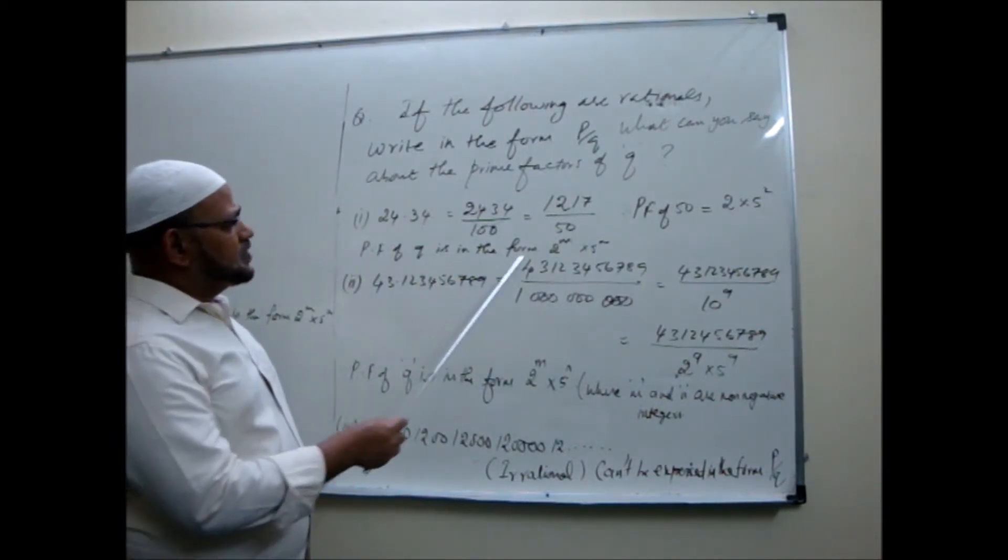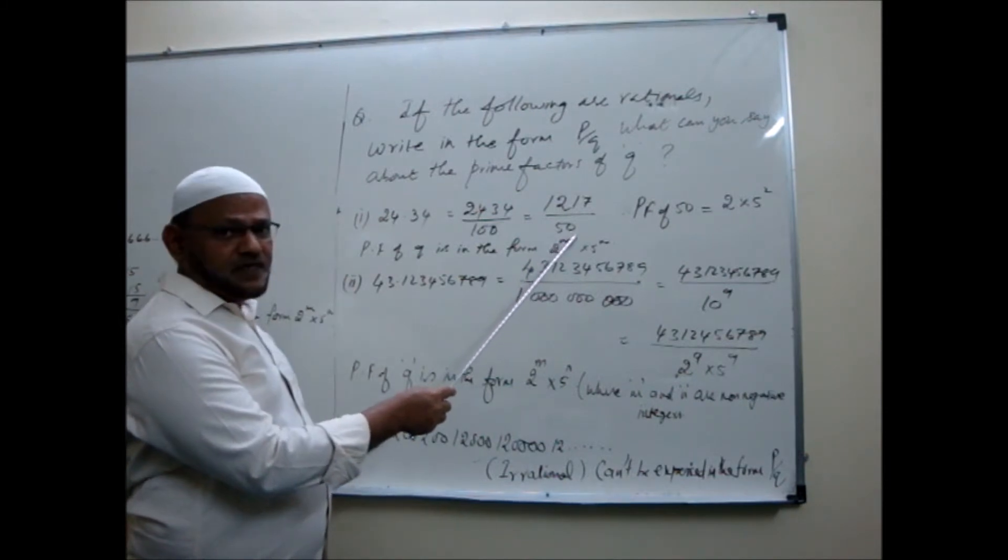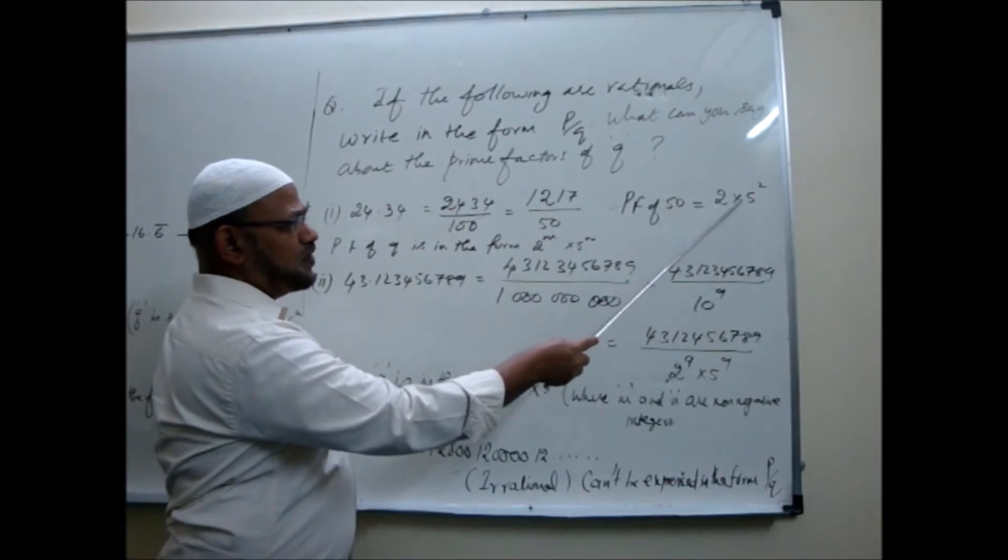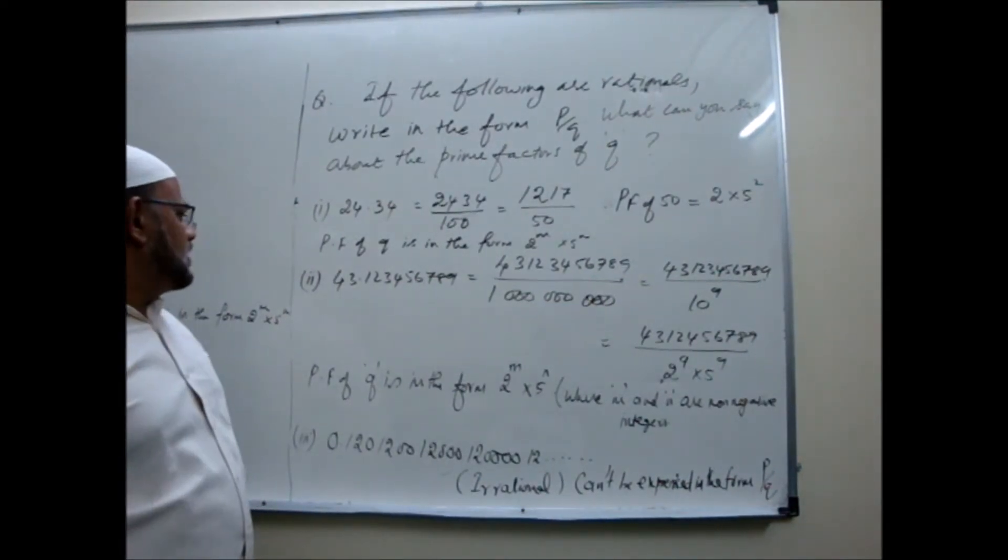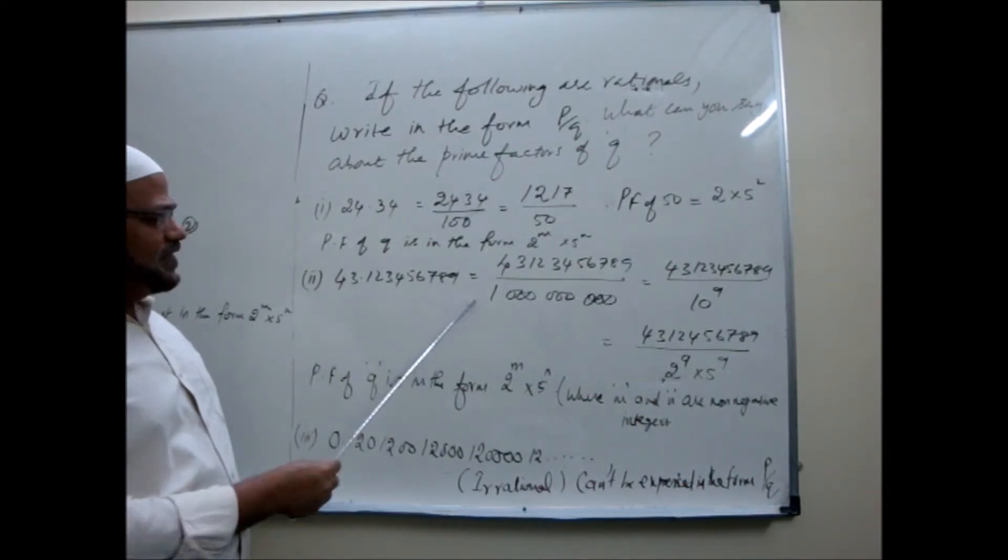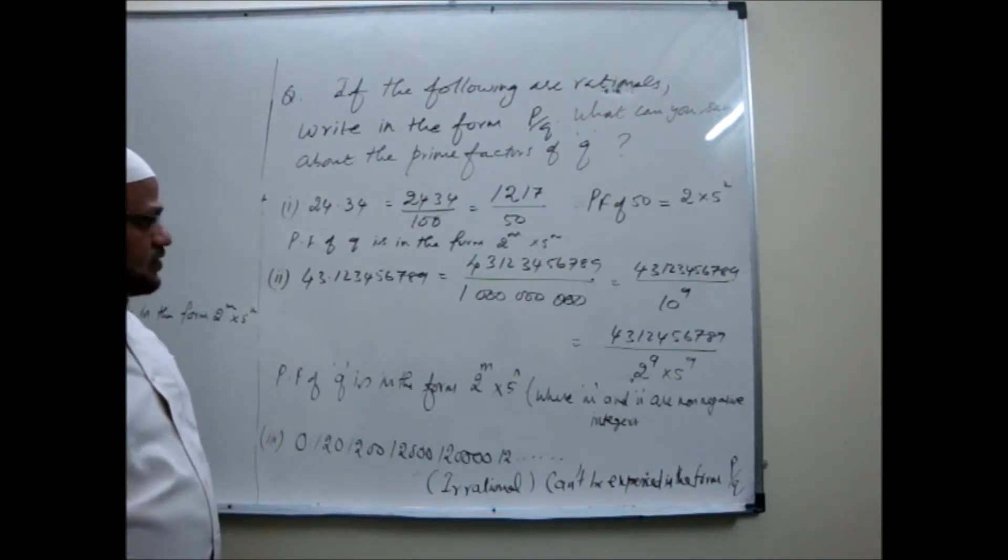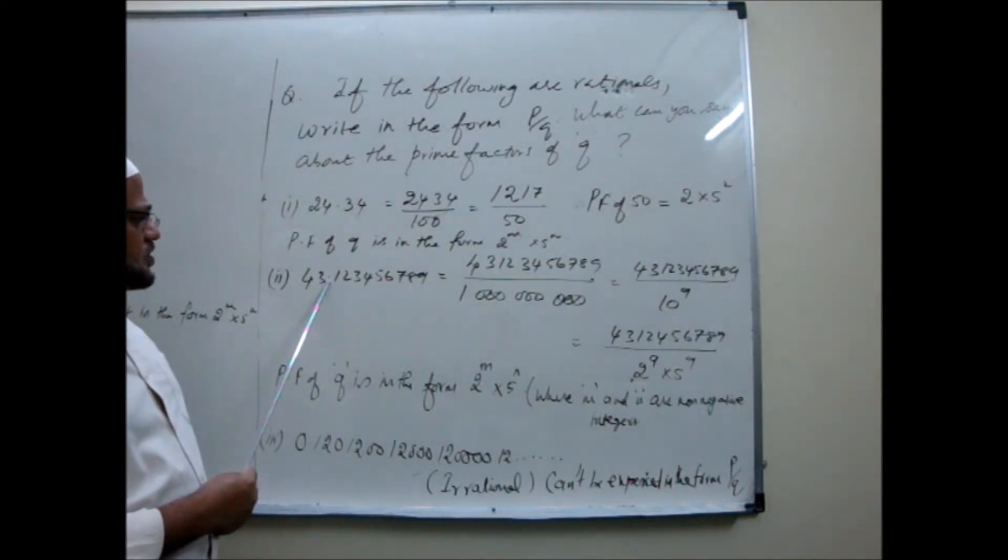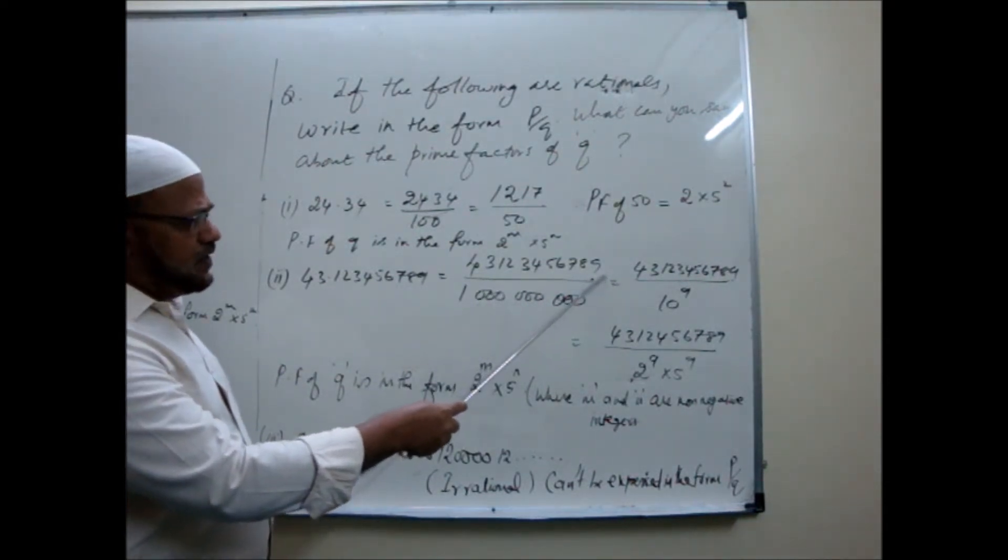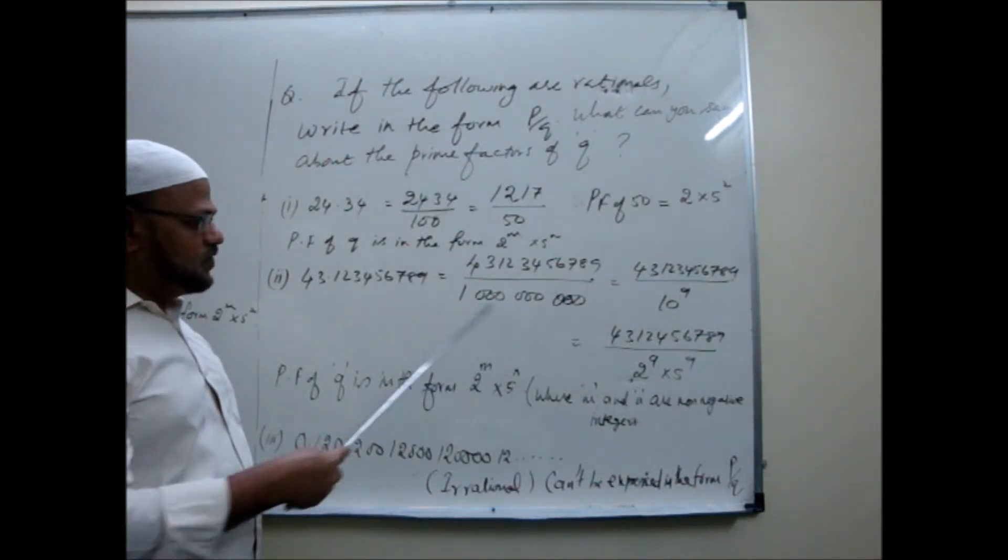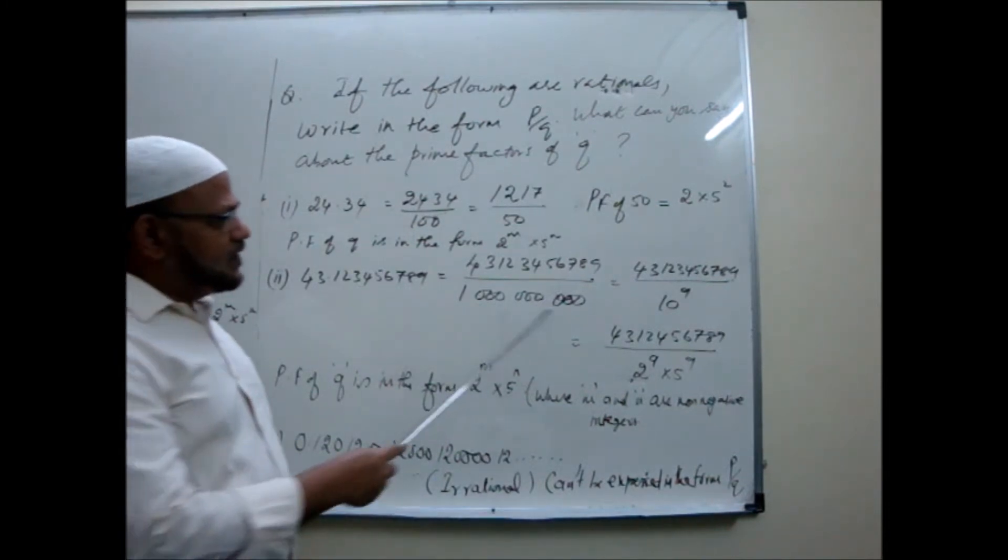First write as fraction in the simplest form. This is what the question. Terminating decimal directly we write. So I have given here prime factors of Q is in the form that the definition, theorem 1.5a, 2 to the power something and 5 to the power something. Go to this one. This is your textbook question. So many digits are there. So 43.123456789, up to 9 digits there. There are 9 digits in the decimal part.